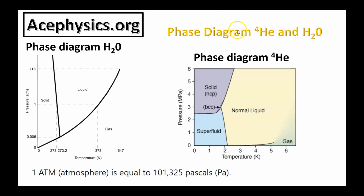I want to discuss the phase diagram for water as well as for helium-4. On the water phase diagram, the y-axis is pressure and the x-axis is temperature. At 1 atmosphere, water is solid ice up to 273 Kelvin, where it changes to liquid water. It remains liquid until 373 Kelvin, where it becomes steam. A very important point is that when you change phases from solid to liquid or liquid to gas, you have to add in extra energy that does not change the temperature — that's the latent heat, and it goes into changing the phase.